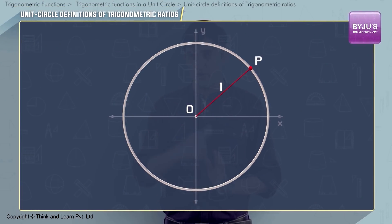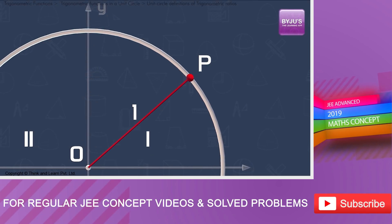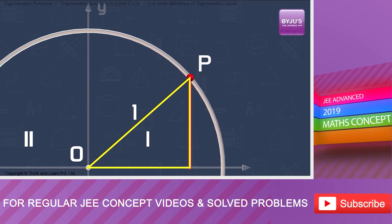Consider the figure on your screen now. Line OP is in the first quadrant. Let's drop a perpendicular line down from P to the x-axis in order to form a right-angled triangle. Consider the angle theta.